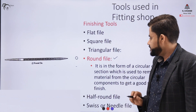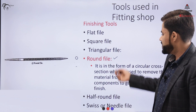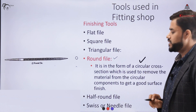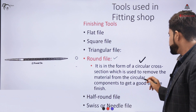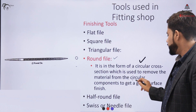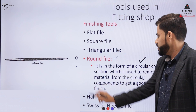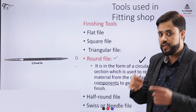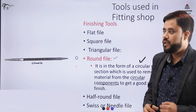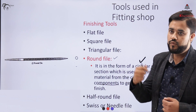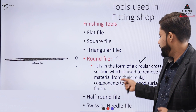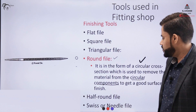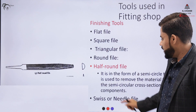The round file has a circular cross-sectional surface and is used to remove material from circular components. For example, if a cylinder needs to be finished and you want to remove material from rounded corners, you would use a round file.